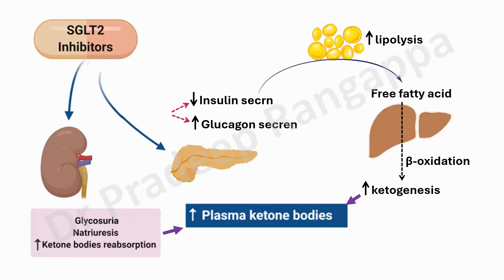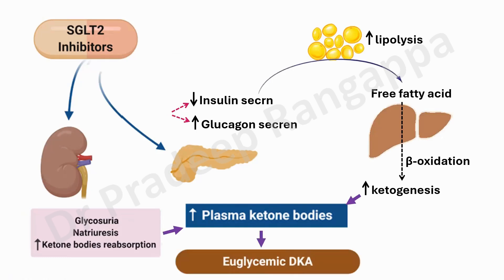There is increased ketone production, largely from SGLT2 usage, increased lipolysis, increased free fatty acids undergoing beta-oxidation, producing increased ketogenesis. All this leads to increased ketone bodies, resulting in euglycemic DKA. Remember this picture — it is the typical conundrum that leads to EDKA.